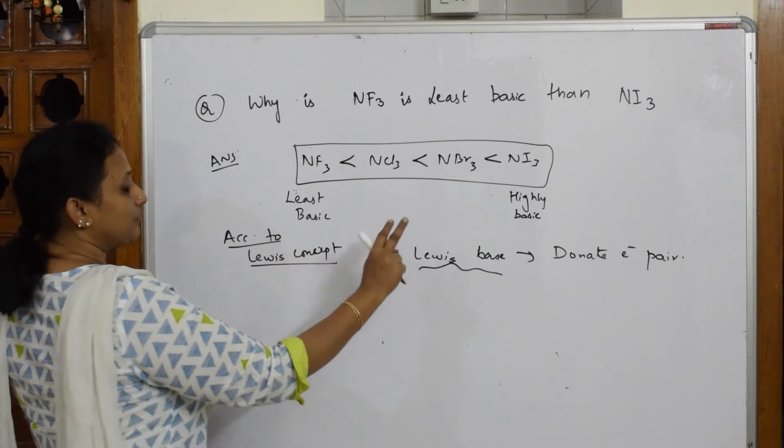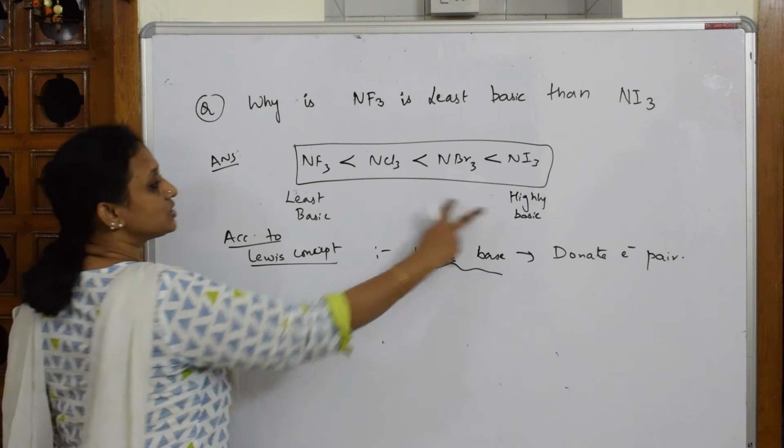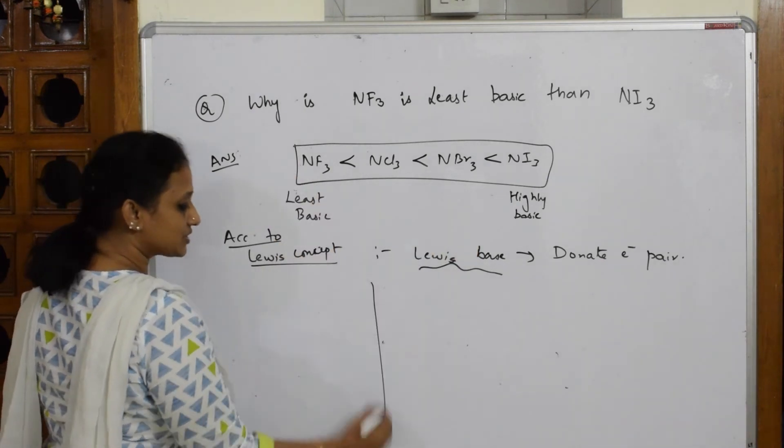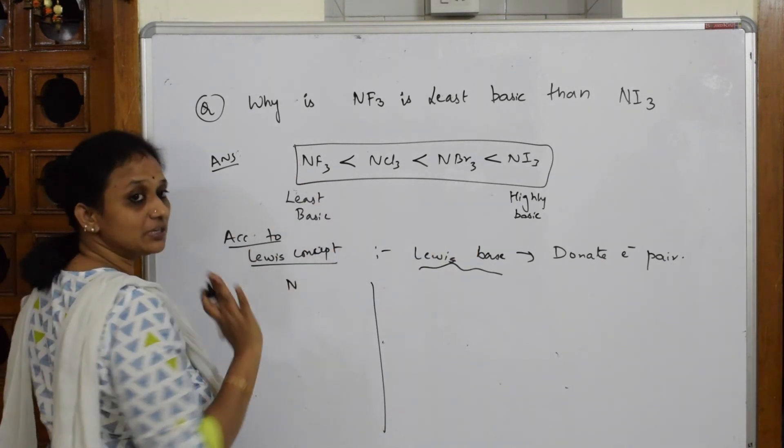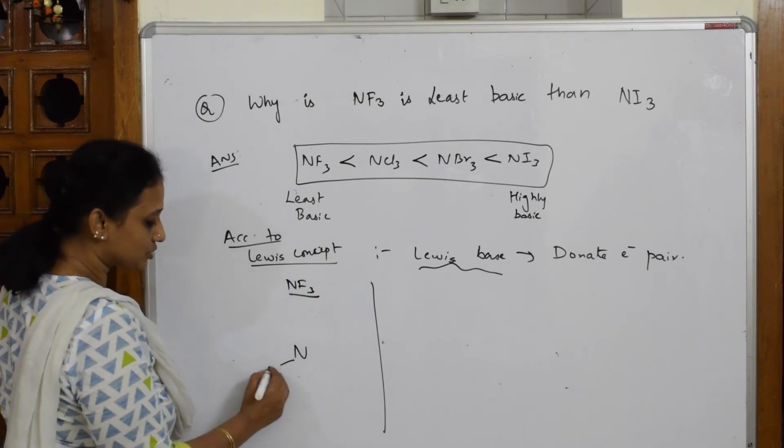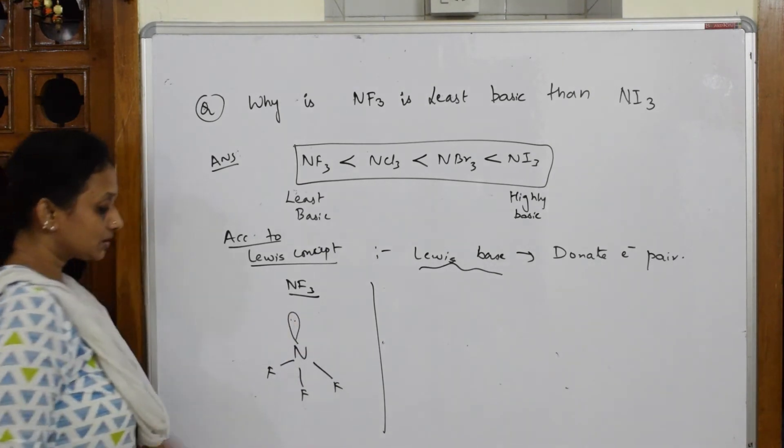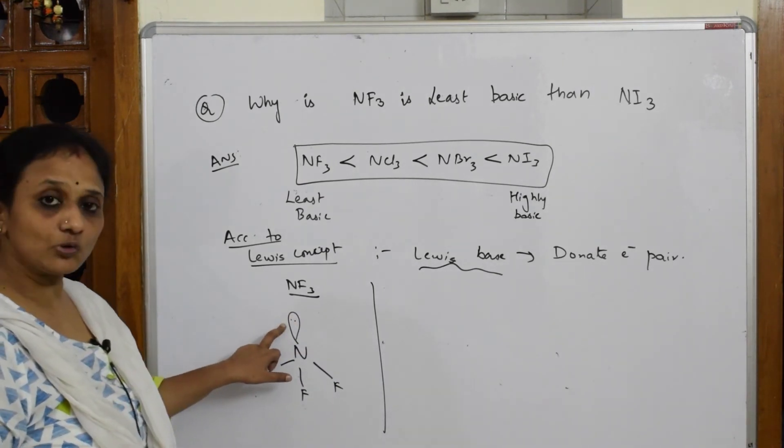Now come back. Whichever donates that will be the strongest base. Now compared to these two, let me come back to first NF3. Now I have to prove it is weak base. In NF3 structure, if I have to see, nitrogen one, fluorine two, this one is three, and a lone pair.